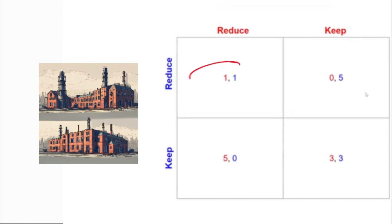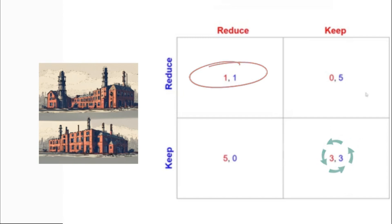As both players reduce the price, they end up overall reducing profits. In such cases, maintaining stable prices is a Nash equilibrium, as it ensures both parties can stay stable.